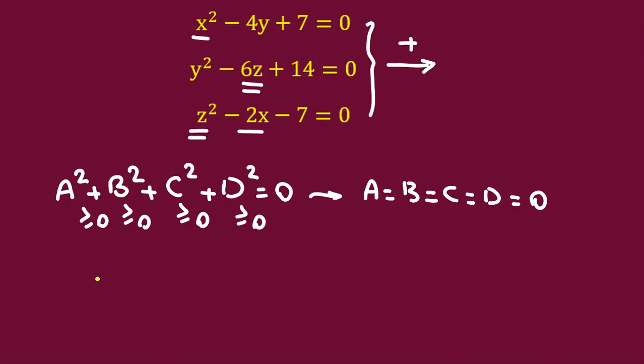If I add all these three terms, let me write with yellow. It will be x squared, negative 2x, plus y squared, negative 4y, this part. I've written this one, this one, y squared, negative 4y, plus z squared, minus 6z, plus 7, minus 7, 0, plus 14, equal to 0.